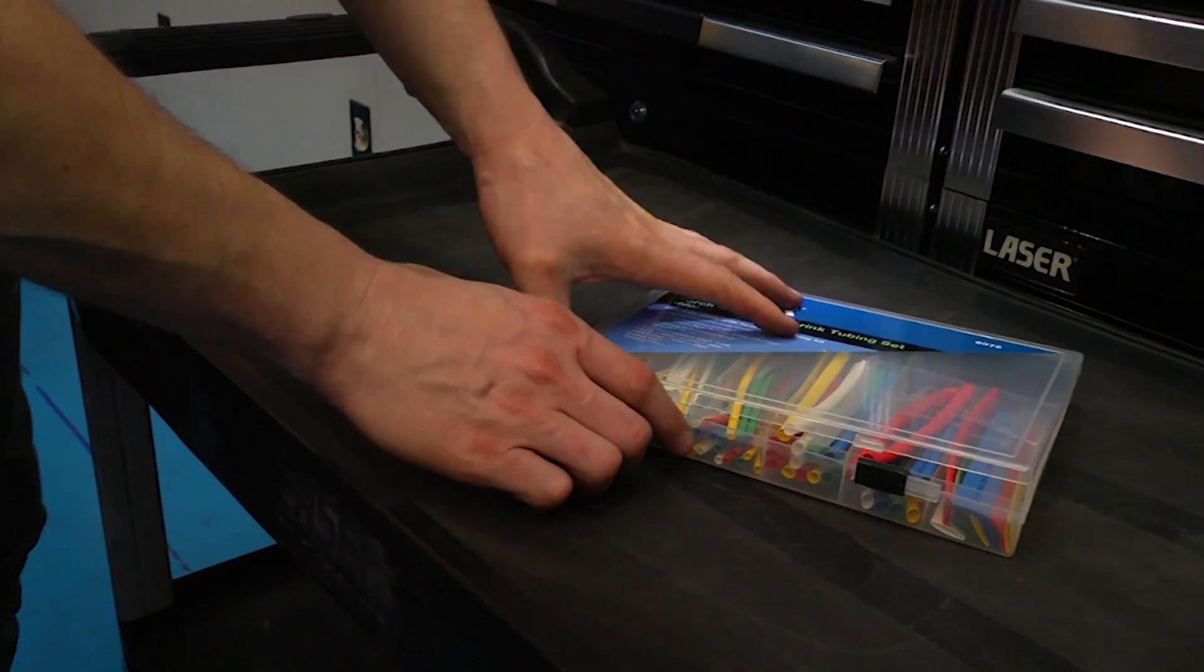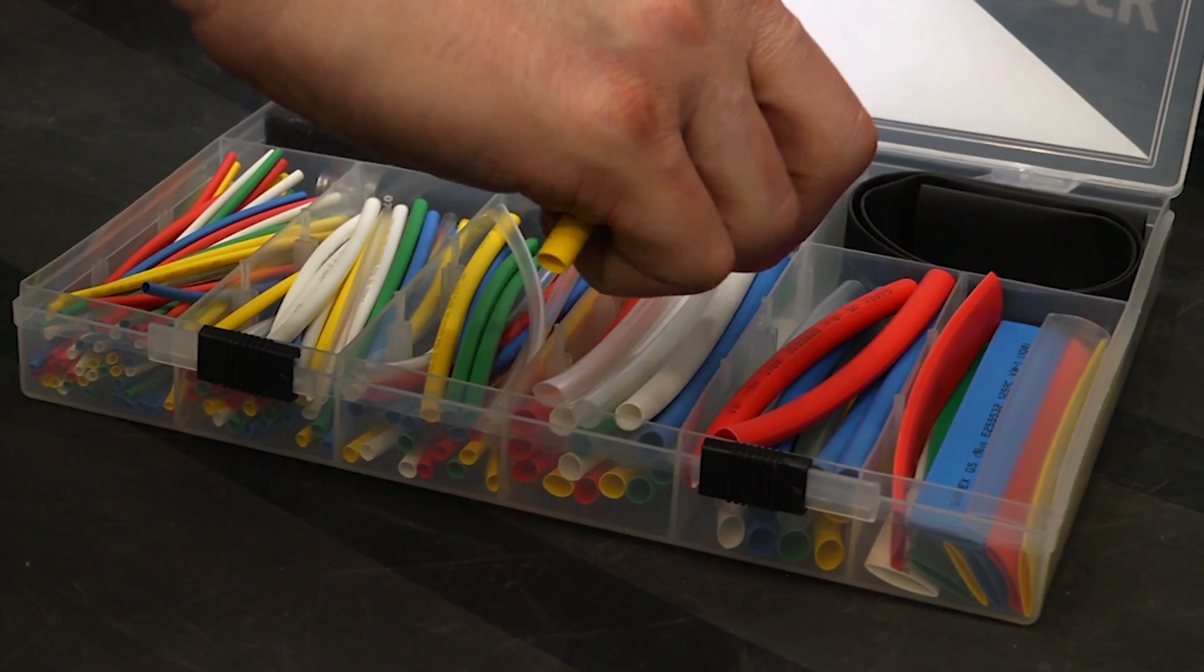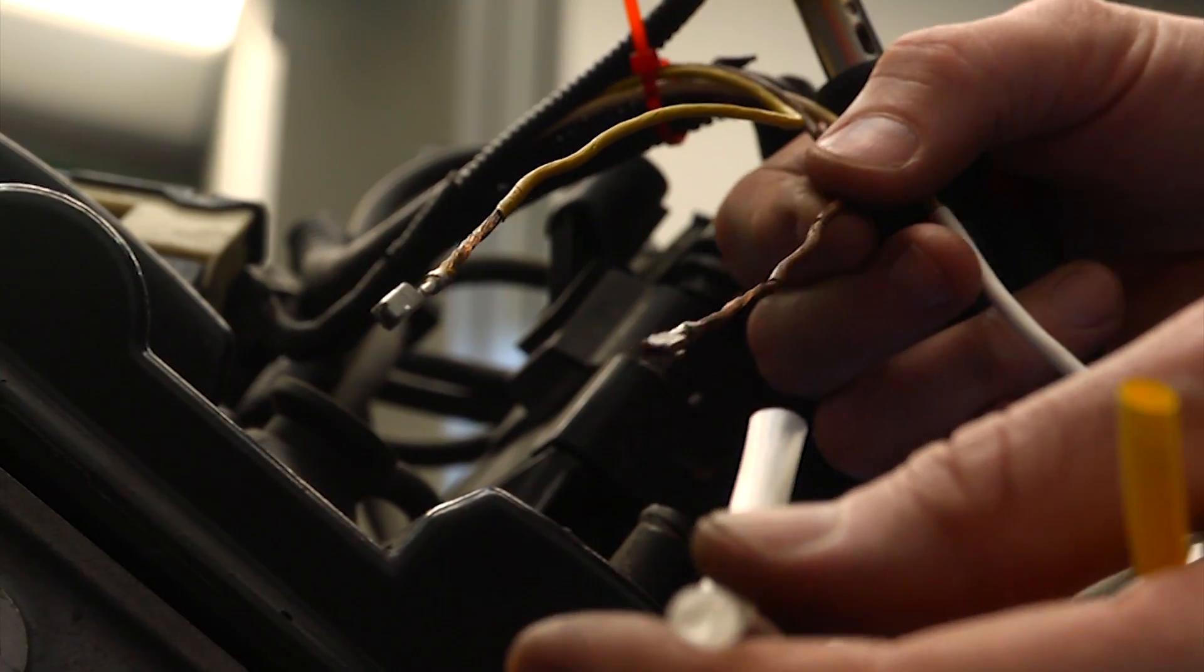This new kit from Laser Tools includes a butane gas-powered heat torch as well as a useful selection of heat shrink tubing.